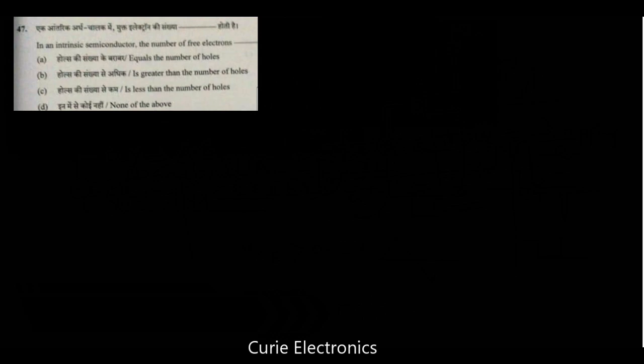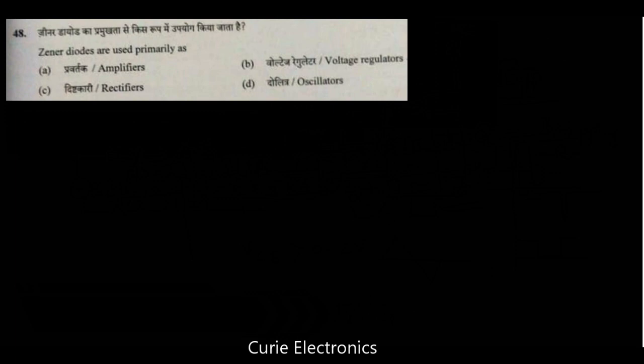In an intrinsic semiconductor, the number of electrons, number of free electrons, it is equal to the number of holes. Zener diodes are used primarily as voltage regulators. All of you know. Voltage regulators. The arrow in the symbol of a transistor indicates the direction of hole current in the emitter.